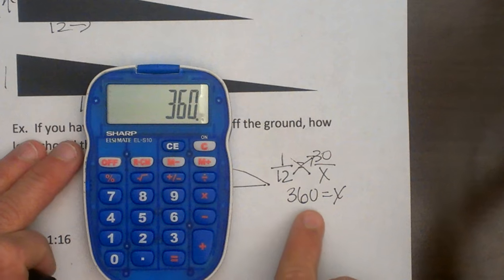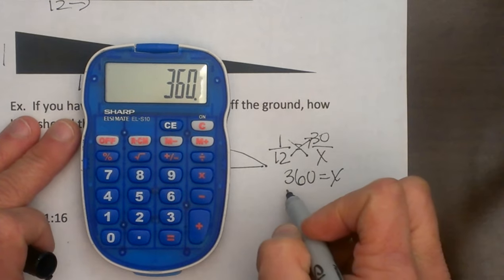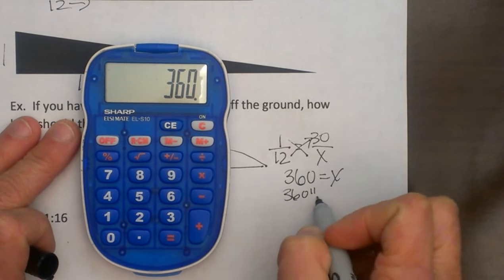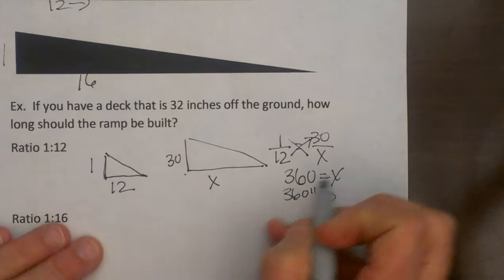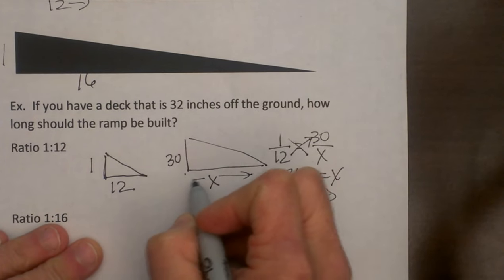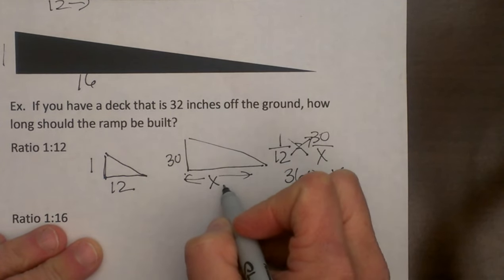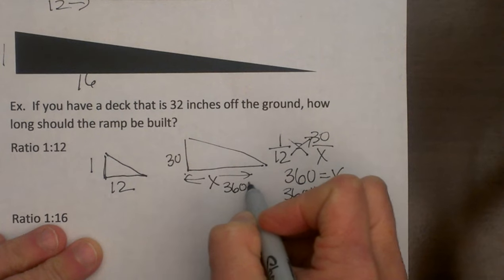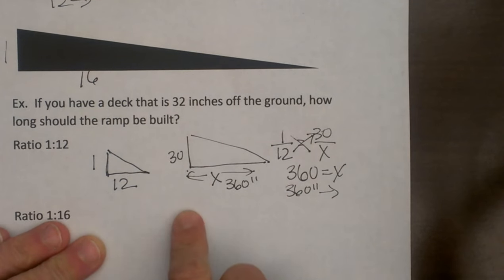So that means my ramp needs to be 360 inches long horizontally. So that is this distance here, 360 inches. That would be a 1 to 12 ratio.